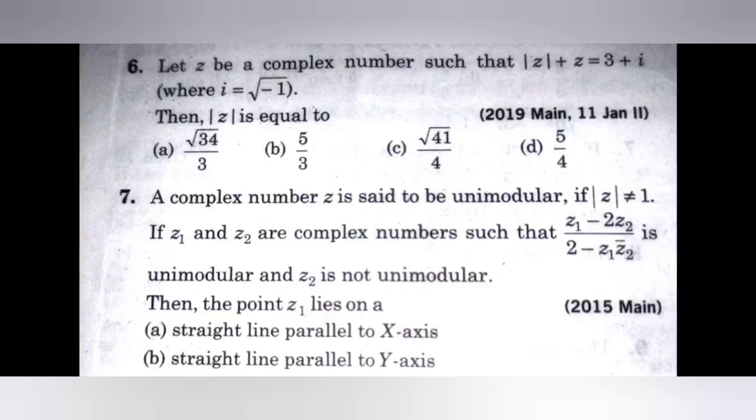Next question. Let Z be a complex number such that mod Z plus Z equals 3 plus i, where i equals square root of minus 1. Then mod Z equals. Find the mod Z value.